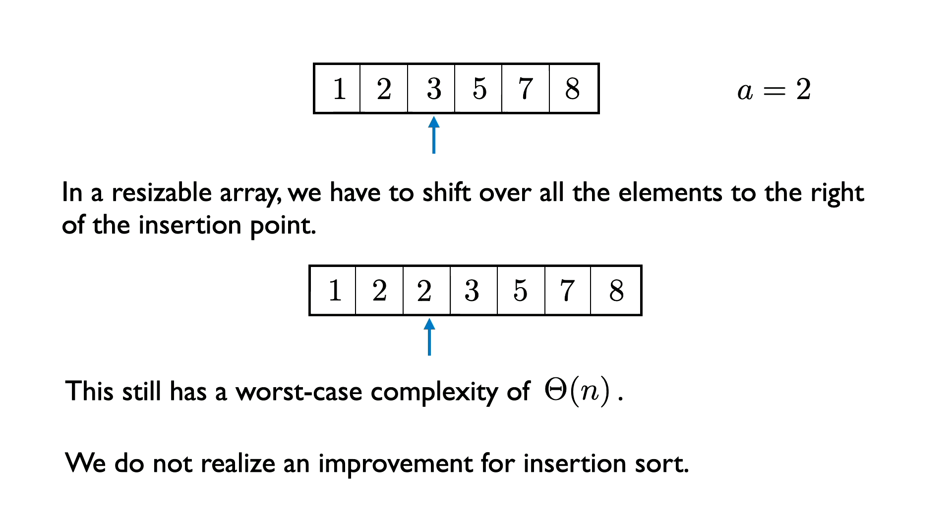Recall our insert-one function used in insertion sort — we spent theta of n time going from right to left doing comparisons and swaps as long as a was strictly less than its left neighbor. So in both cases — using binary search then shifting everything over, or the original insertion sort algorithm — the worst case running time is theta of n. Up to constant factors, we cannot use binary search to speed up insertion sort.